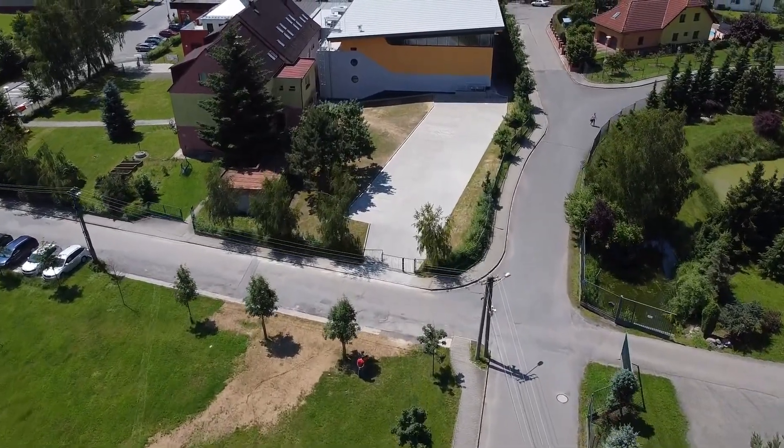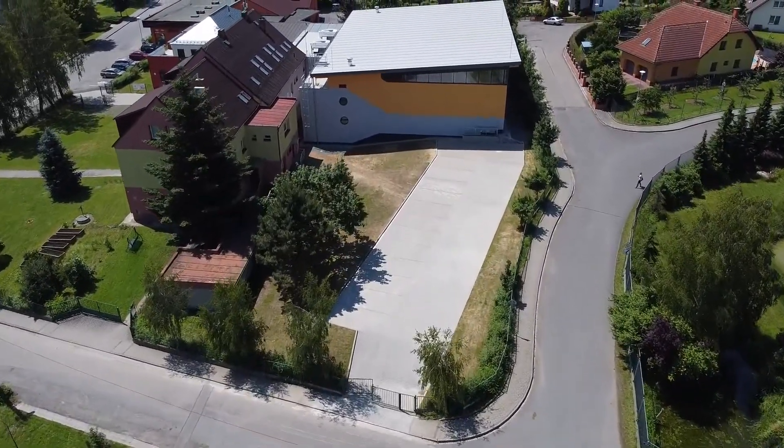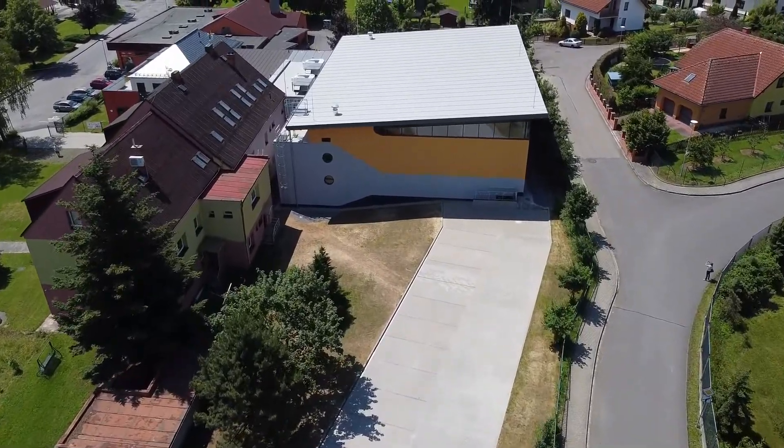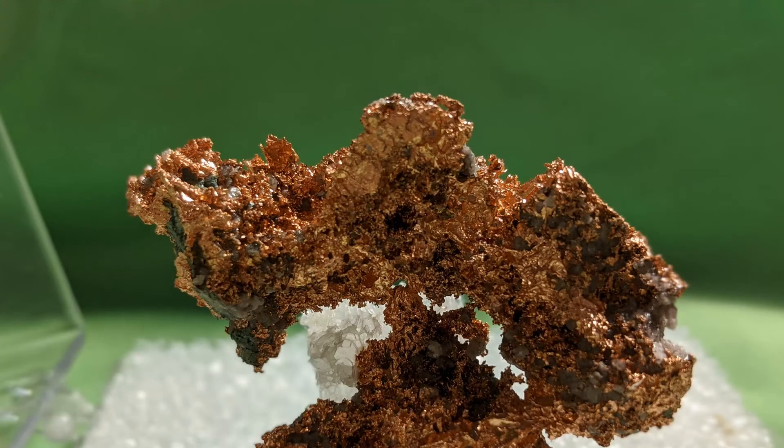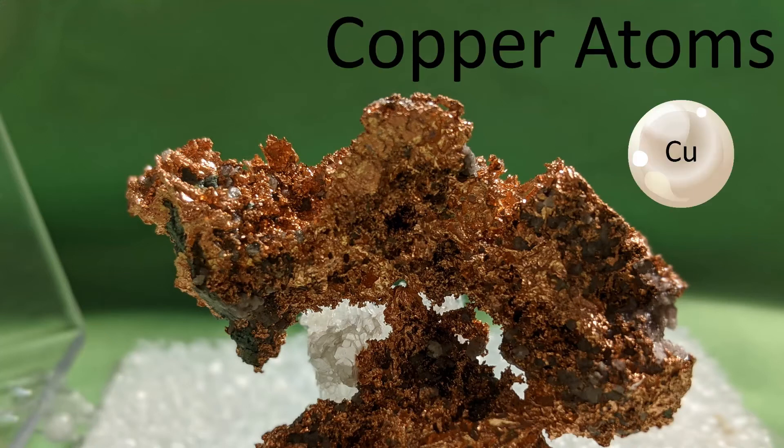All matter, all the stuff around you that has mass and takes up space, is made of atoms and molecules. Some things, like this shiny piece of pure copper, are made of just one type of atom. In this case, copper atoms.